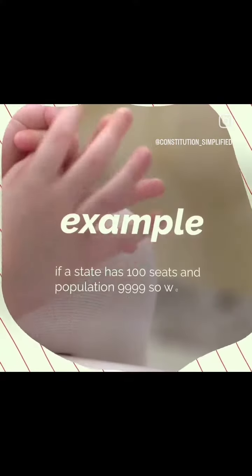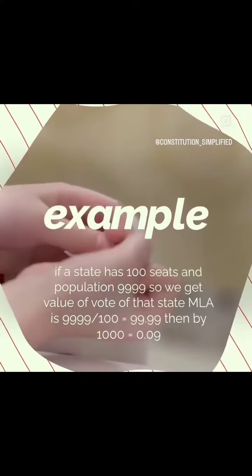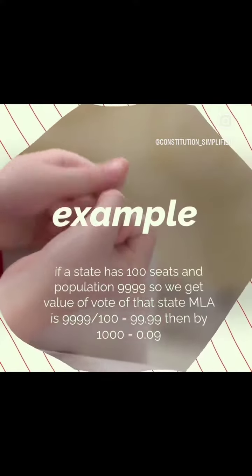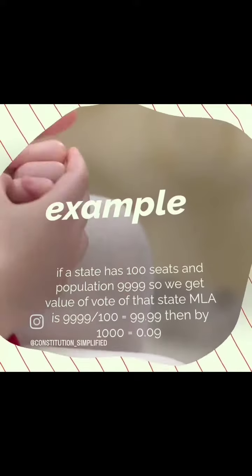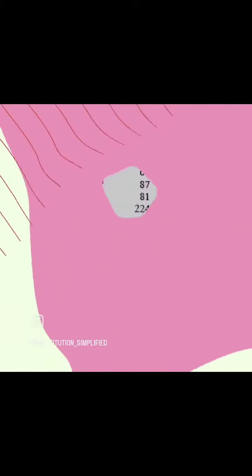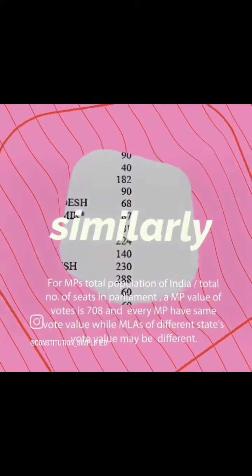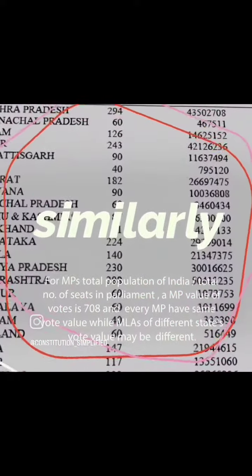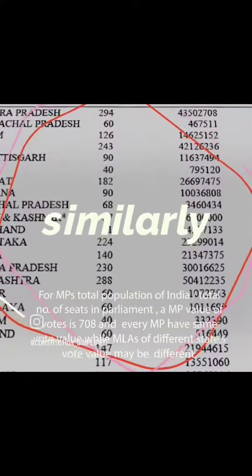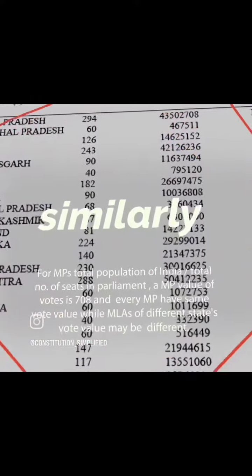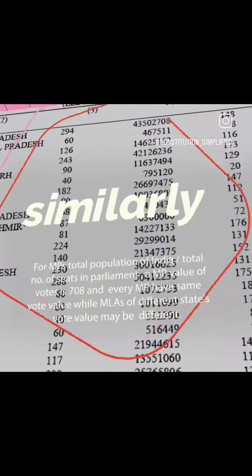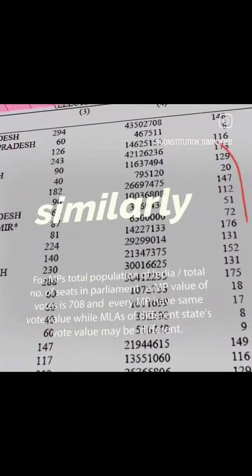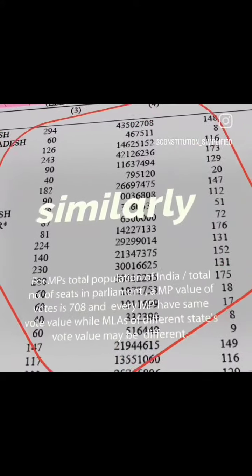If a state has 100 seats in proportion to its population, the value of the vote of that state's MLA is 0.09 for all MLAs of that state. Similarly for MPs, total population of India divided by total number of seats in Parliament gives an MP vote value of 708, and every MP has the same vote value, while MLAs of different states may have different vote values.